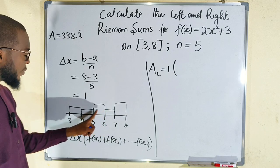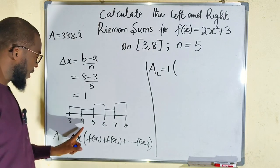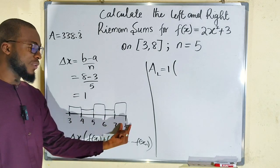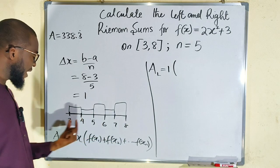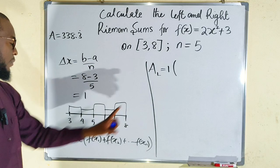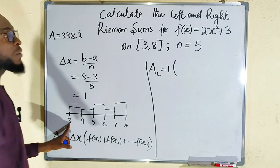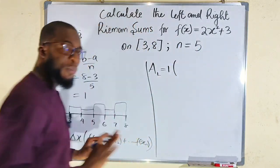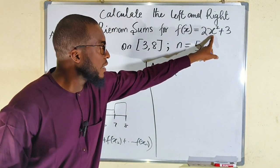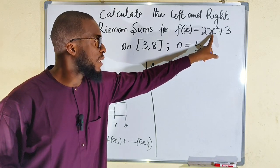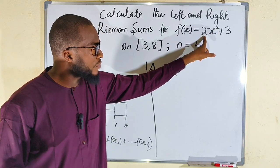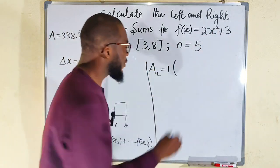For the right Riemann sum you would start at 4 and stop at 8, including 8 but skipping 3. For the left Riemann sum we include 3 and exclude 8. Taking x equals 3 and plugging it into 2x squared plus 3: 3 squared is 9, times 2 is 18, plus 3 gives us 21.